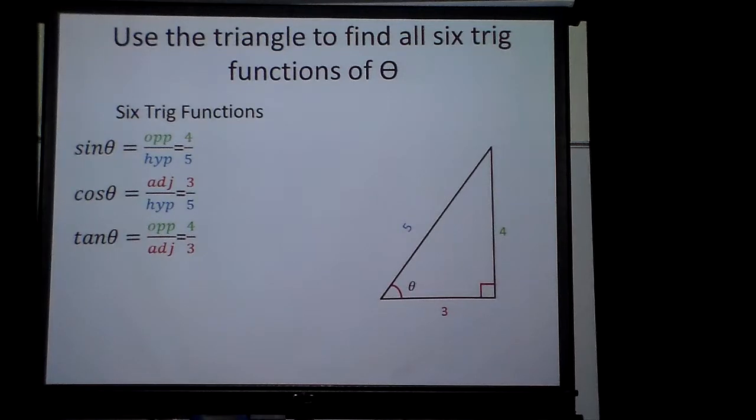And now we have what we call the reciprocals. Cosecant, well, that's hypotenuse over opposite. So instead of 4 fifths, it's 5 fourths.